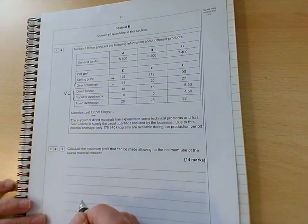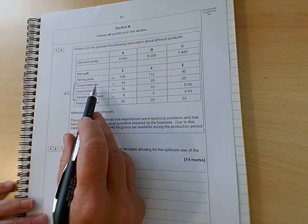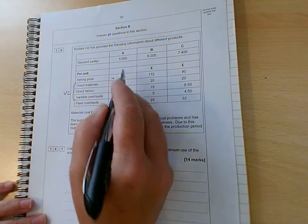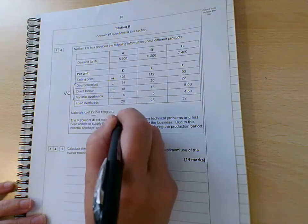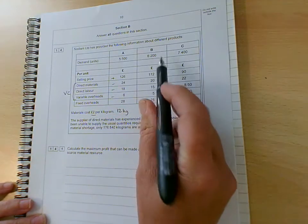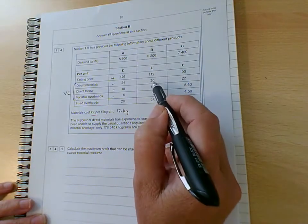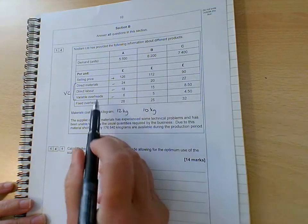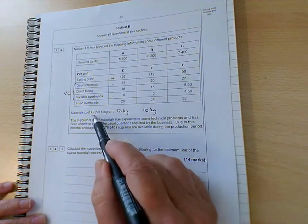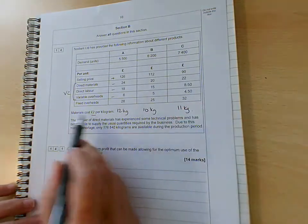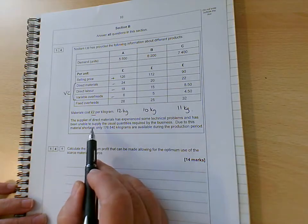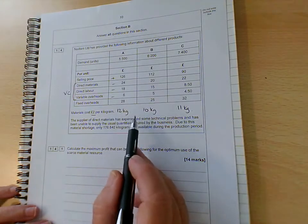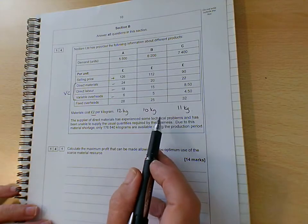It tells us that materials cost £2 per kilo, so we can find out how many kilos go into each unit of output. So that means that if it's £24 for product A, and it's £2 a kilo, 24 divided by 2 is 12 kilograms. We can do the same for product B, £20 worth of materials divided by £2 is going to give us 10 kilos of materials going in there. And then £22 of materials divided by 2 is 11 kilos there. Now that is going to be useful to us in a minute, spoiler alert, because if we read on we'll see that there isn't enough material to make absolutely everything. So we're going to have to work out how best to optimise what materials we've got in order to achieve the greatest level of profit.